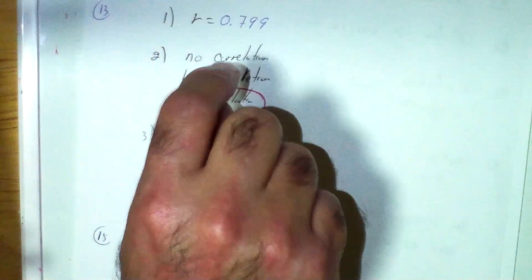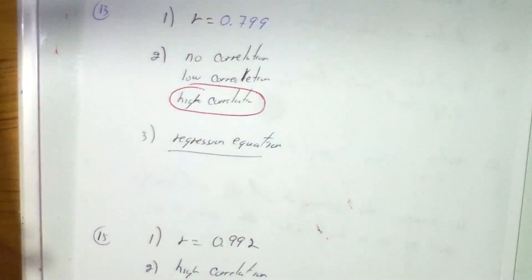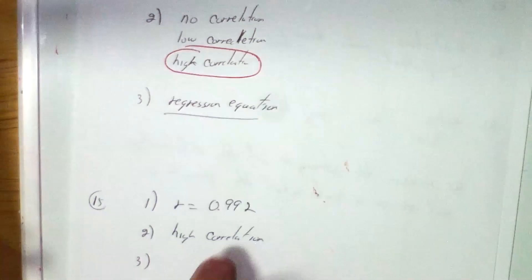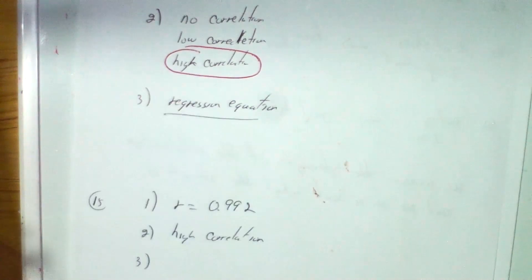That's all you do for parts one and two. On your homework and on the exam, you write down whichever correlation it fits — just write 'high correlation.' That's what I want to see. The last two problems on the exam are going to ask you to do all three things, and you have to show all three on your final exam and homework.